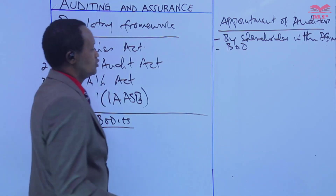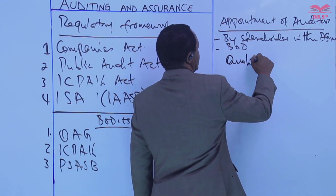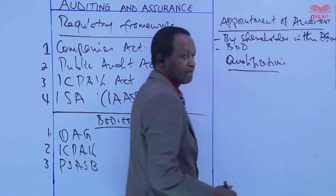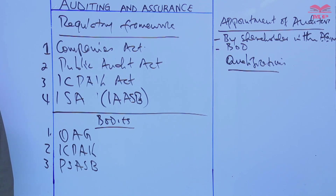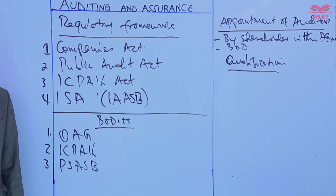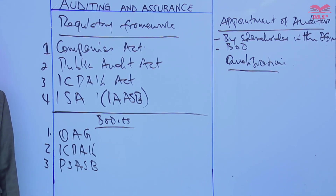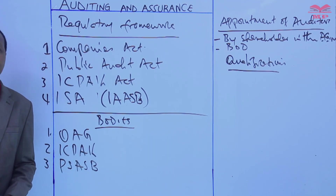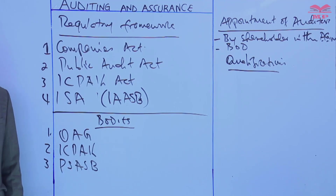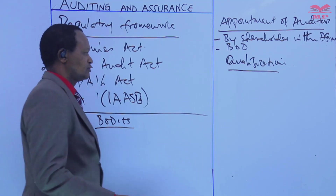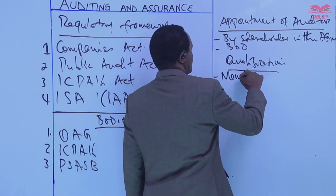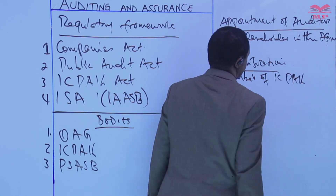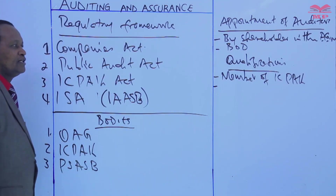Let's move on to qualification — what are the qualifications of auditors? Who qualifies to be an auditor? Now the auditor who qualifies must first of all be a member in good standing of the Institute of Certified Public Accountants of Kenya. One qualification is that the auditor must be a member of ICPAK.